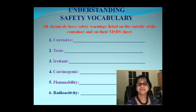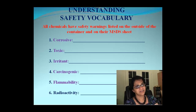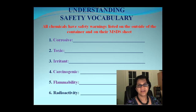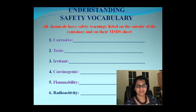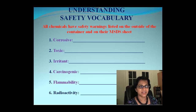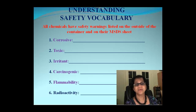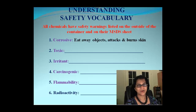Sometimes there are some safety warnings which are listed outside the container and also on the MSDS sheet. The terms we have are corrosion, toxic, irritant, carcinogenic, flammability, and radioactivity. All these terms indicate that the chemical is hazardous or has some safety requirement.